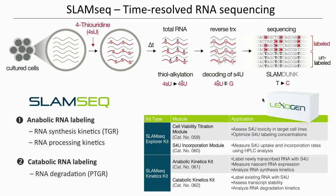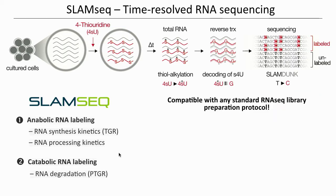SLAM-Seq is available through the Lexogen platform since late last year as a SLAM-Seq Explorer kit, which enables optimization of labeling conditions in the cell type of interest, and as a SLAM-Seq Kinetics kit. We distinguish between an anabolic RNA labeling kit, which enables determination of RNA synthesis kinetics to investigate transcriptional gene regulation and RNA processing kinetics, and a catabolic RNA labeling kit, which enables investigation of RNA transcript stabilities for post-transcriptional gene regulation. This is an add-on approach compatible with any standard RNA library preparation protocol. We have very good experience with mRNAs using the QuantSeq mRNA 3' end sequencing approach, which provides a rapid, cost-effective workflow with simplified bioinformatics analysis.